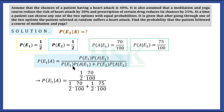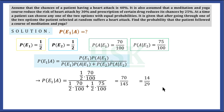Substituting the values: P(E1) × P(A|E1) = 1/2 × 70/100, divided by 1/2 × 70/100 plus 1/2 × 75/100. The 1/2 and 1/100 terms cancel out, leaving 70 divided by 70 plus 75, which is 70/145. This simplifies to 14/29, which is the required answer.